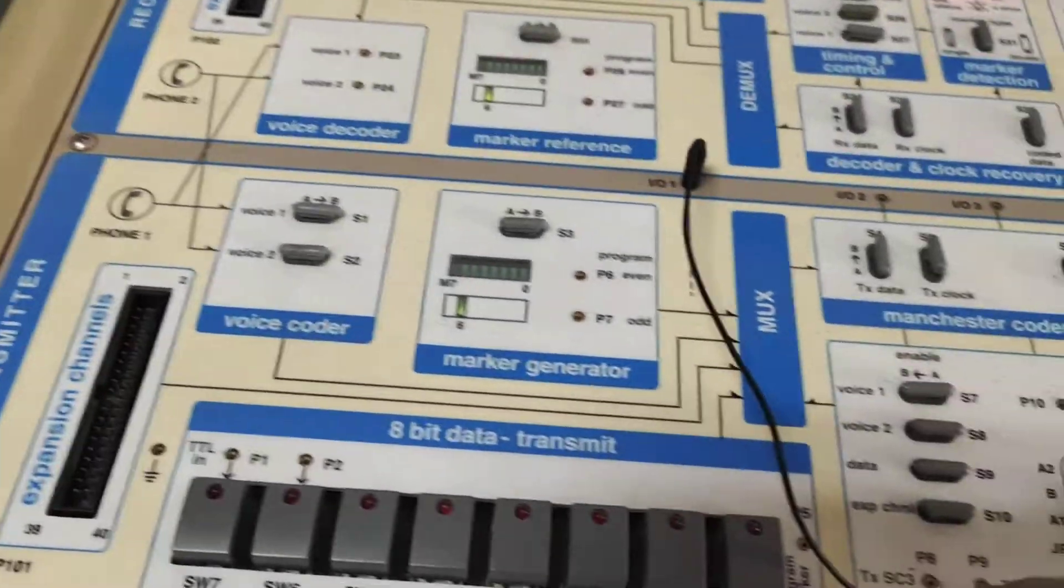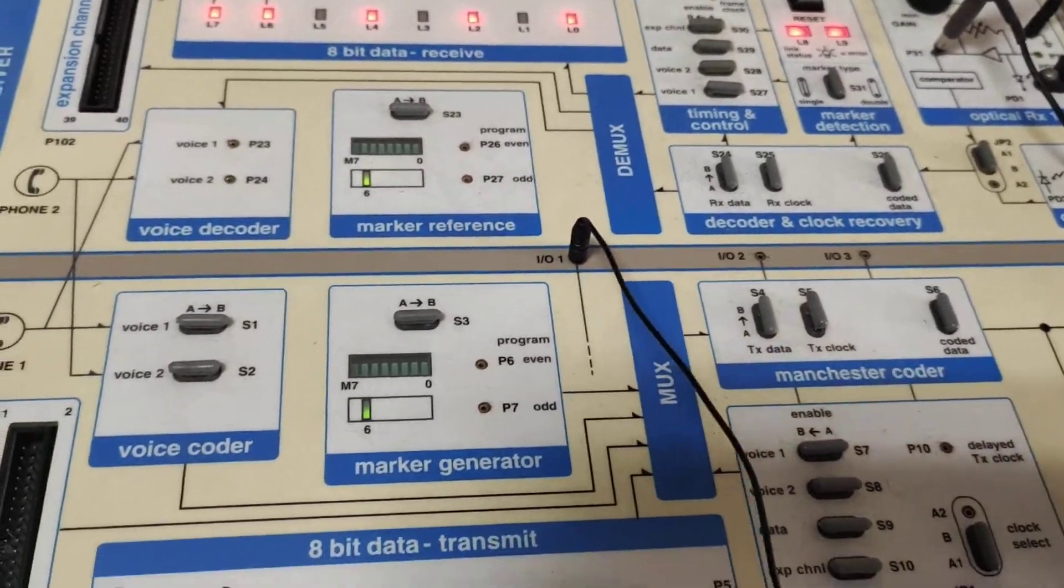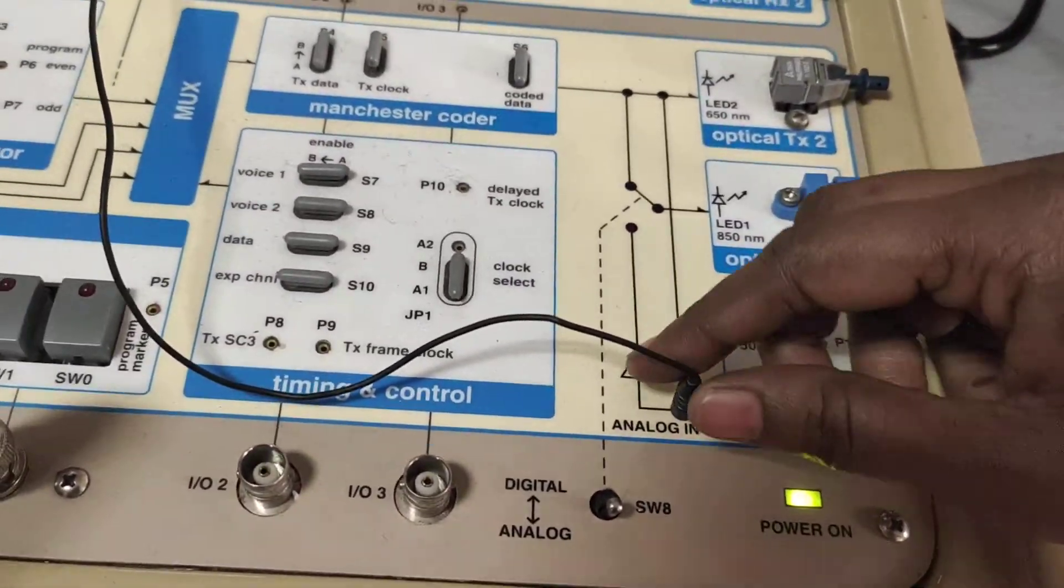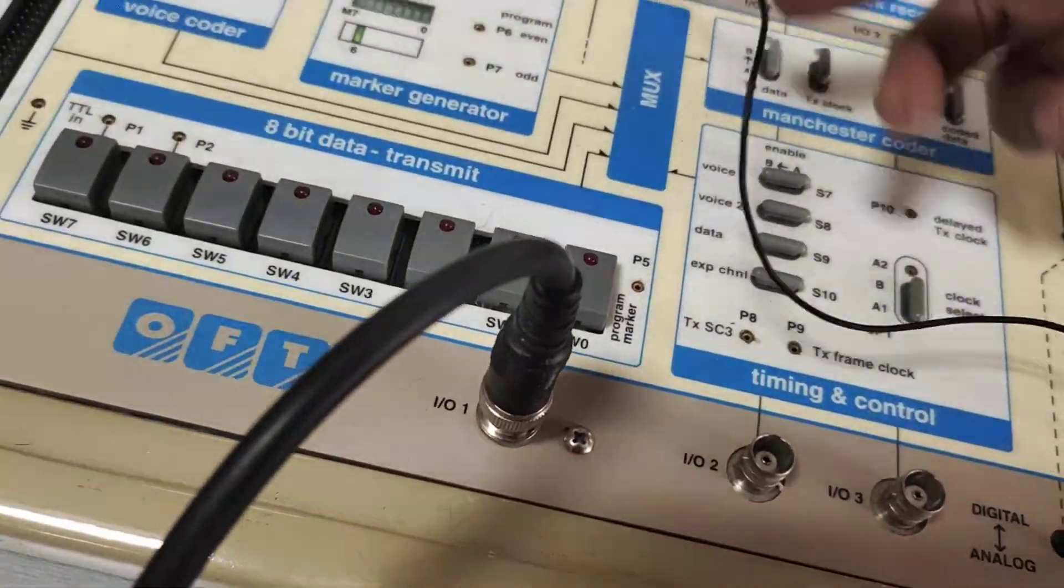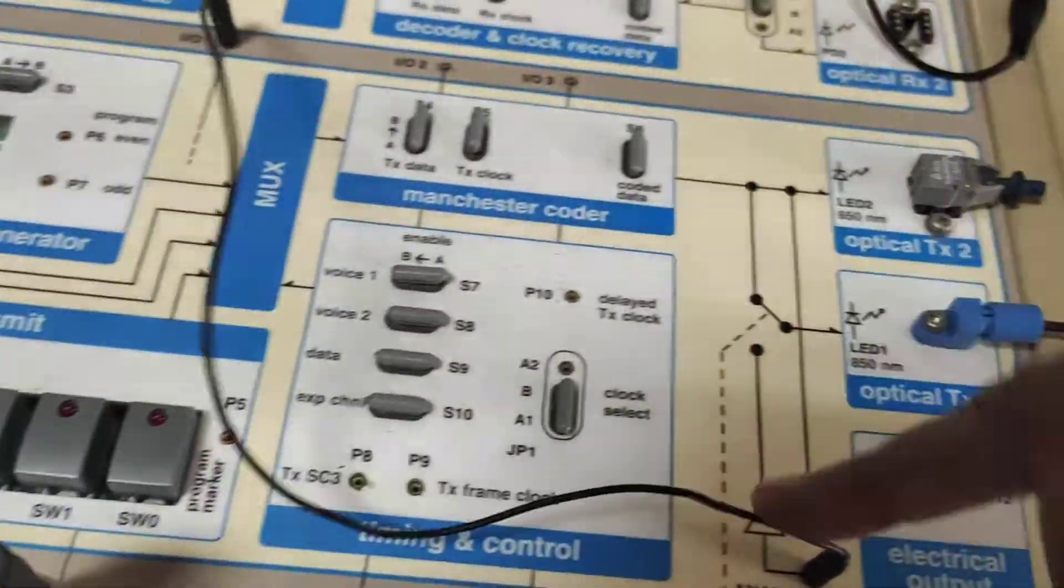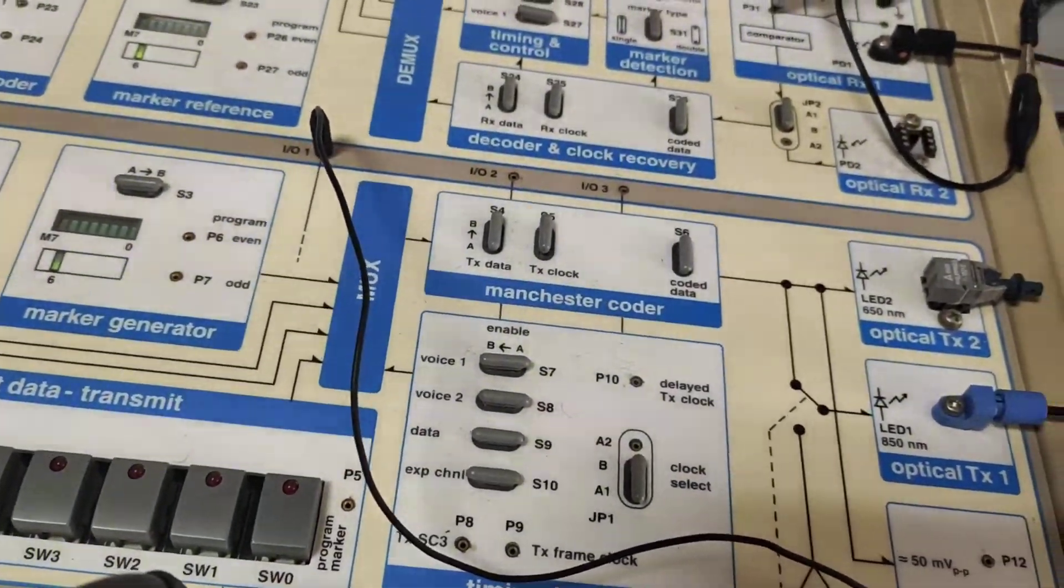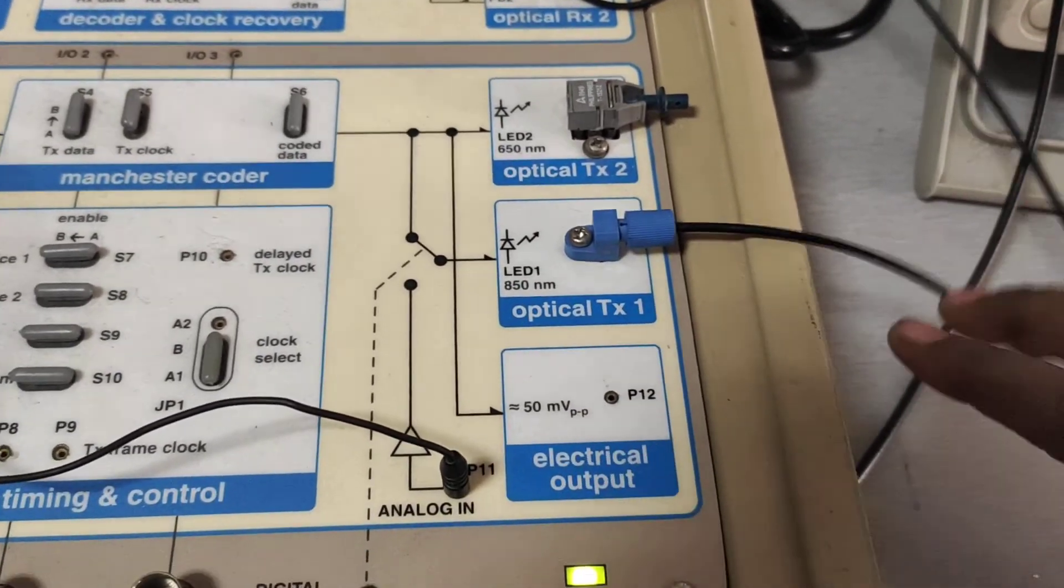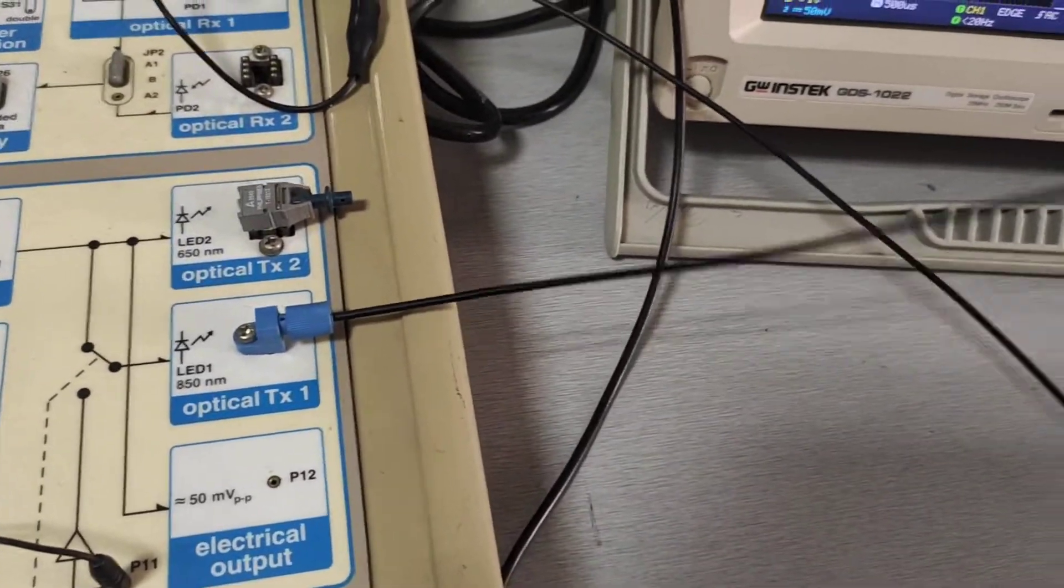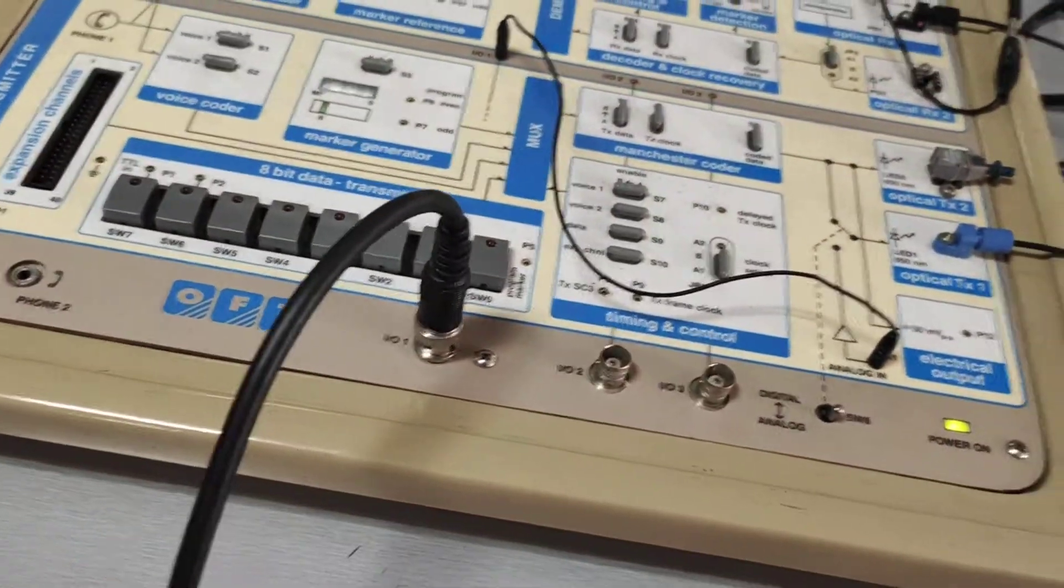You see here, this input IO1 port is connected to the analog input of the block. With the help of the patch cord, we are connecting these two points. Now, the given electrical signal is converted into light signal. Our information is carried by this optical fiber. After setting up this input signal, we are going to observe the output voltage for a particular frequency.